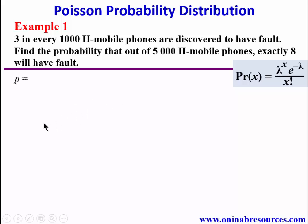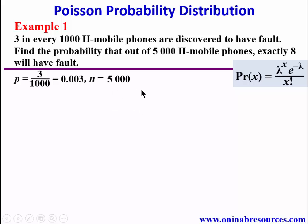First we find the probability of success: p = 3/1000 = 0.003. The total number of mobile phones is n = 5,000. Therefore lambda is np = 5,000 × 0.003 = 15.